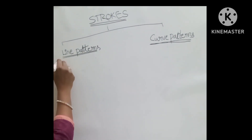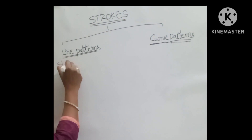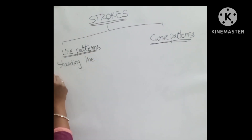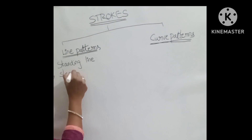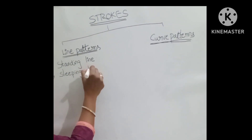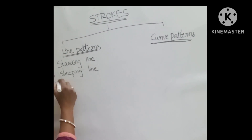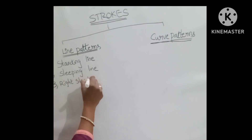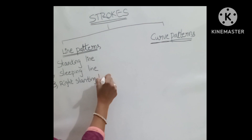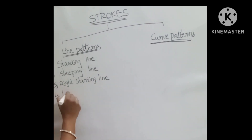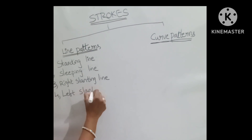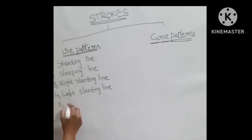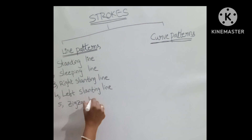First, standing line. Right standing line. Left standing line. And the fifth one, zigzag lines.